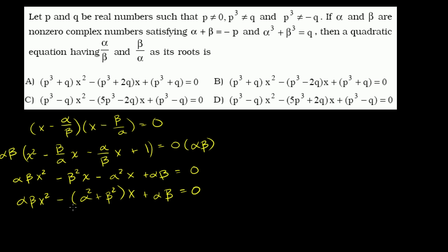I got something in terms of alpha and beta. When you look at the answer choices, clearly they want answers in terms of p's and q's. So let's see if we can convert this. A good place to start: they tell us alpha plus beta equals negative p. If we square that, we'll relate things, and if we eventually take it to the third power, we can get some of these terms and relate them to q.